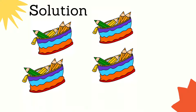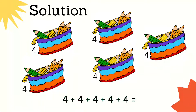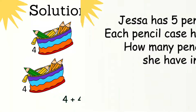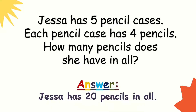We can draw 5 pencil cases, and there are 4 pencils in each pencil case. That's the illustration. There are 4 pencils in each pencil case, so we can add: 4 plus 4 plus 4 plus 4 plus 4 equals 20. There are 5 groups of 4. Going back to the problem — how many pencils does she have in all? Jessa has 20 pencils in all.